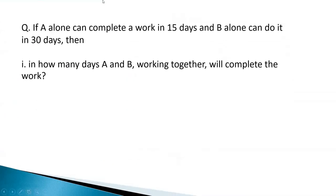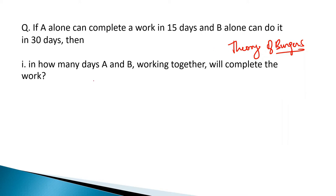If I complete the question saying: if A alone can complete a work in 15 days and B alone can do it in 30 days, then in how many days will A and B working together complete the work? I want to introduce a beautiful theory called the Theory of Burgers, which helps you understand the question much more easily. Theory of Burgers says you just need to take a common multiple of the given numbers. For 15 and 30, a common multiple is 30, so you consider 30 burgers as your job — or 60 burgers. Anything is okay.